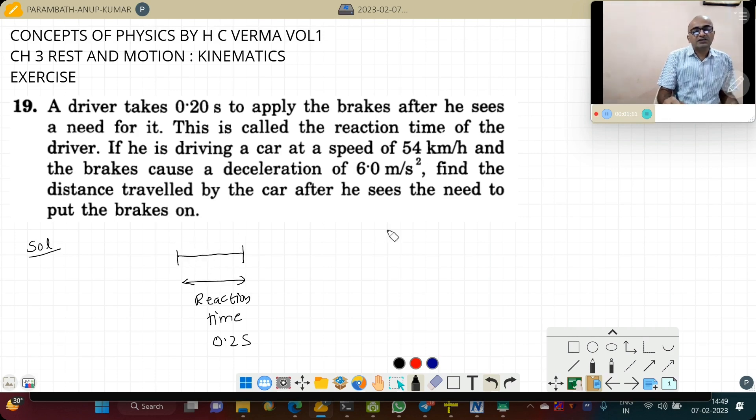So here in the beginning, initial velocity was 54 km per hour. Let us convert it to m per second: that is 54 into 5 by 18, which is 15 m per second. This is the initial speed of the driving car. So here also it is 15 m per second, here also 15 m per second, then only the brake starts functioning.